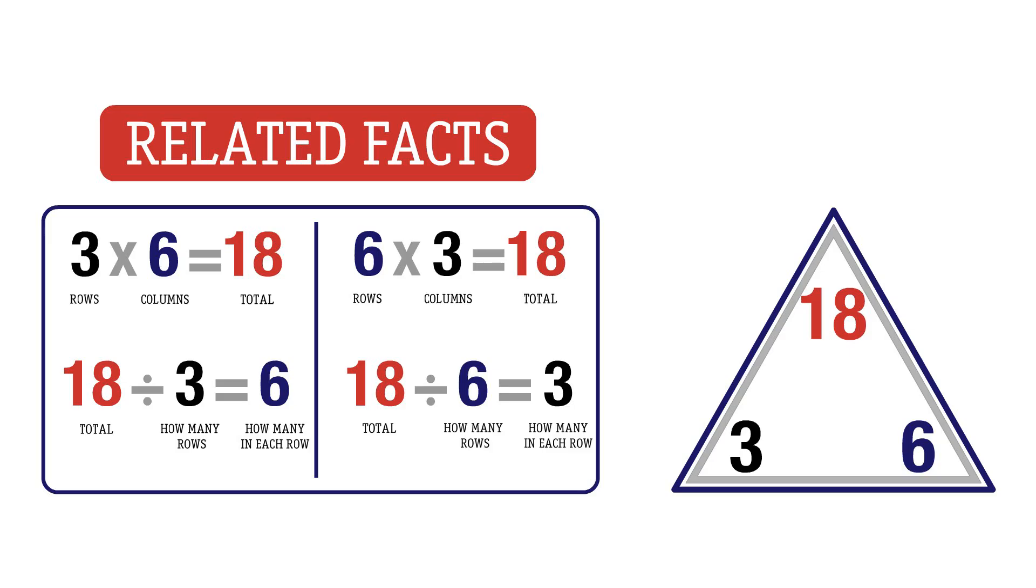Let's take a look at the first sentence. 3 times 6 equals 18. 18 divided by 3 equals 6. 6 times 3 equals 18. 18 divided by 6 equals 3.